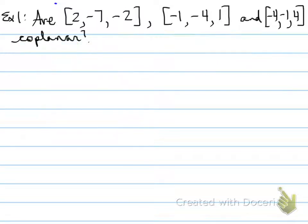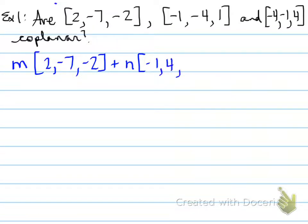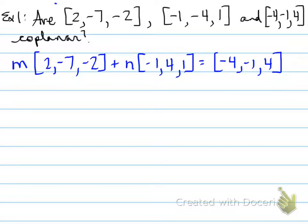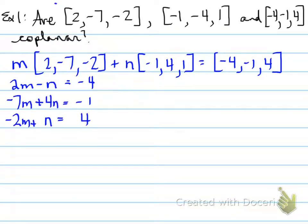Let's retry this. We're going to rewrite this question so that if it's true they are all coplanar, a scalar value times the first vector plus a scalar value times the second vector must equal the third vector. Because if they're coplanar, they all lie on the same plane and must be linearly dependent. So we take all the scalar values and combine the i, j, and k components. This gives us equations 1, 2, and 3. We can only use two equations to solve for two variables — the third equation is used to check the values.